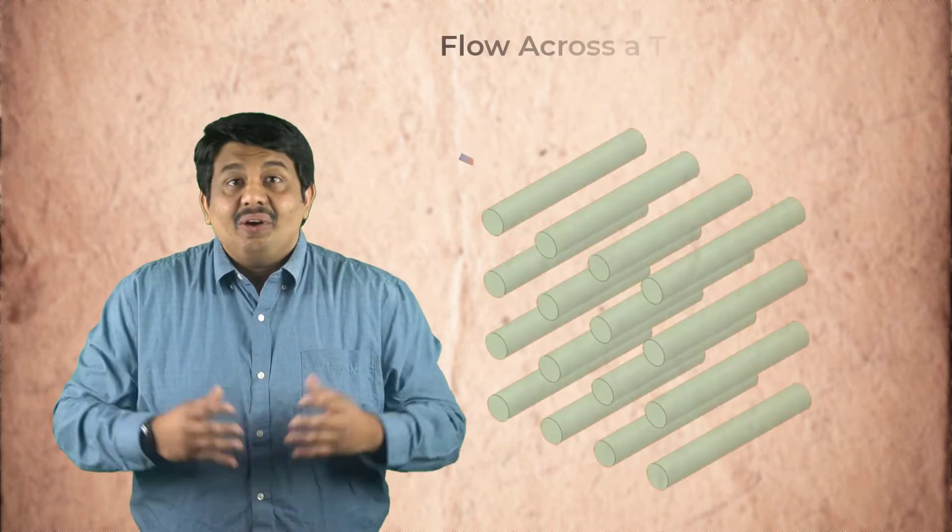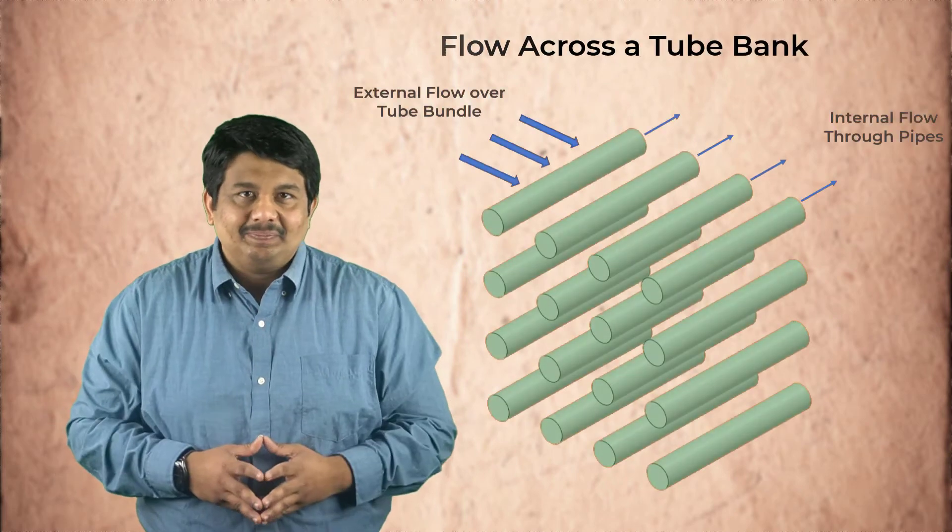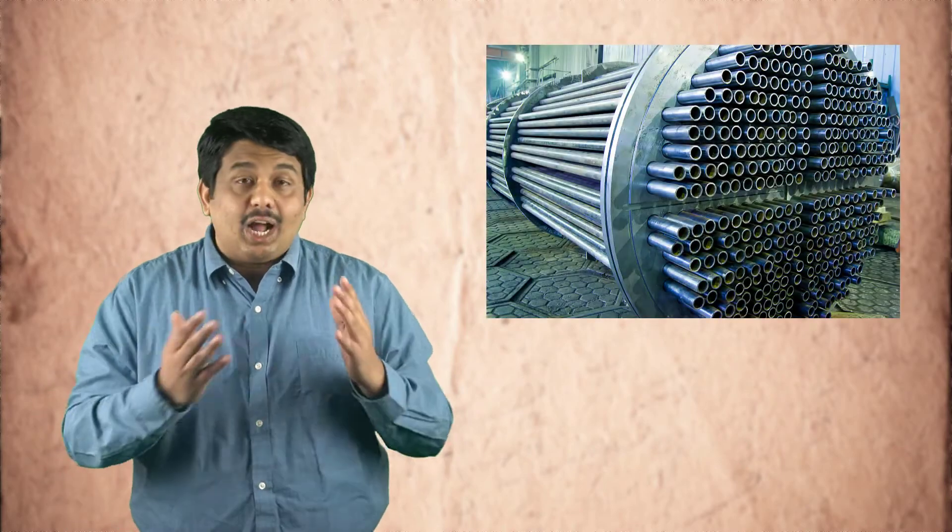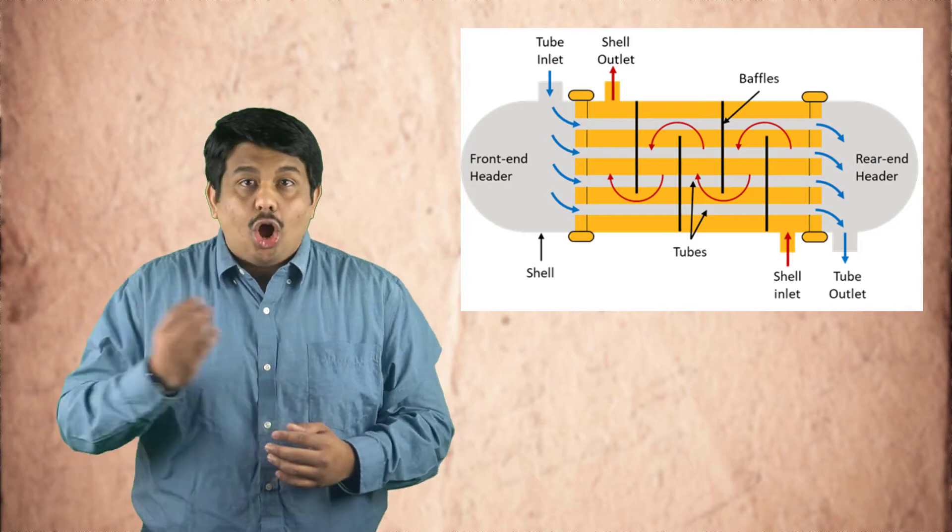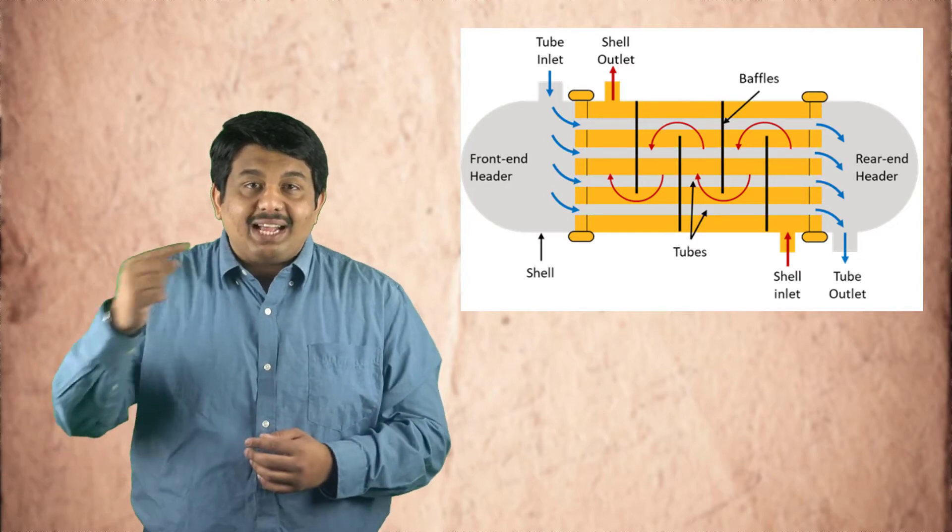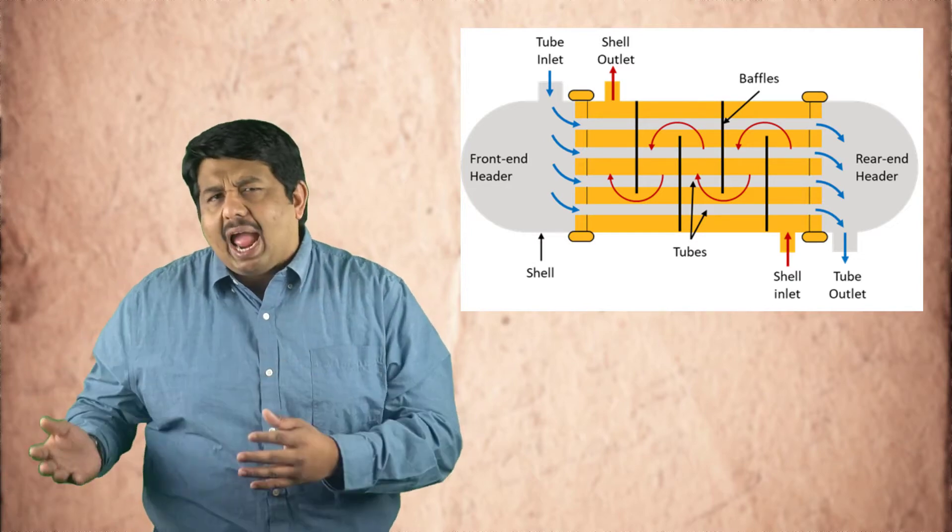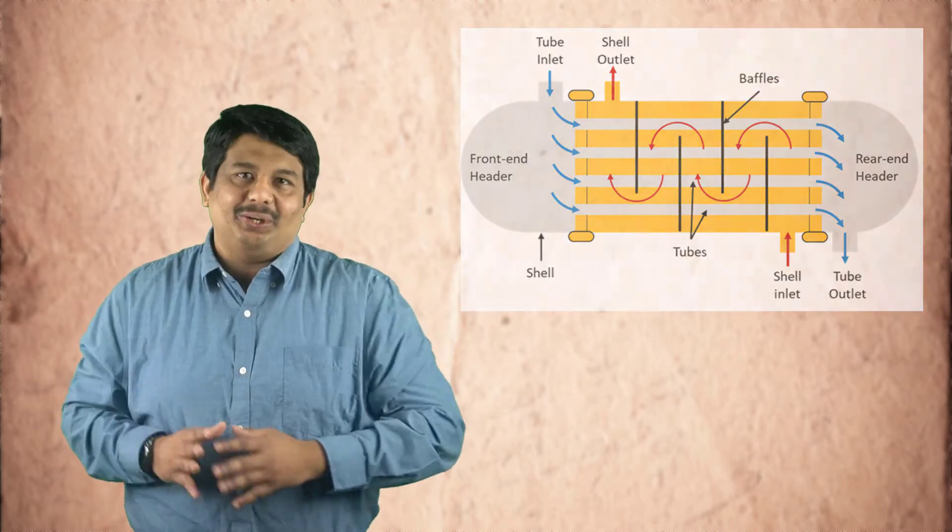Let us now look at a different case: flow across a tube bank. A tube bank is a set or collection of tubes carrying a cold or hot fluid. These are commonly seen in devices such as heat exchangers where a second hot or cold fluid is passed over the tube bank to add or remove heat from the fluid inside the tubes.